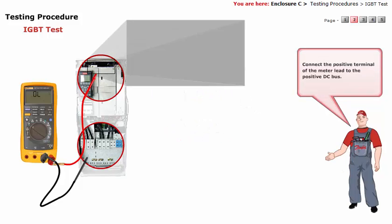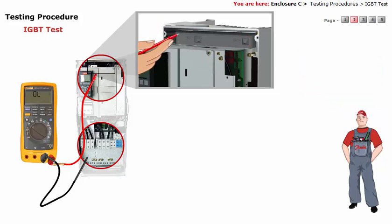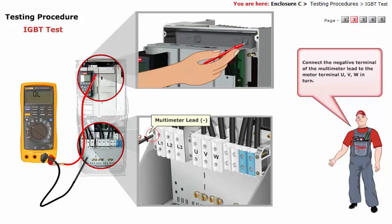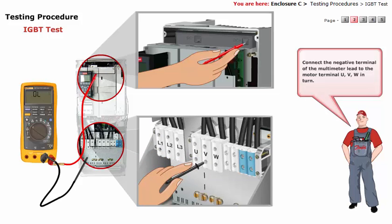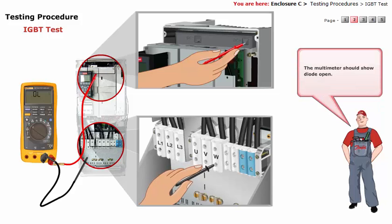Connect the positive terminal of the meter lead to the positive DC bus. Connect the negative terminal of the multimeter lead to the motor terminals U, V, W in turn. The multimeter should show the diode open.